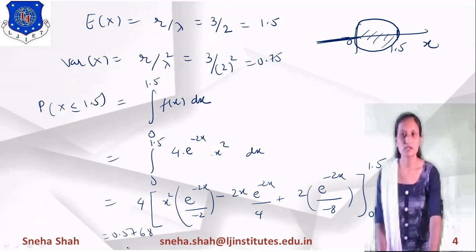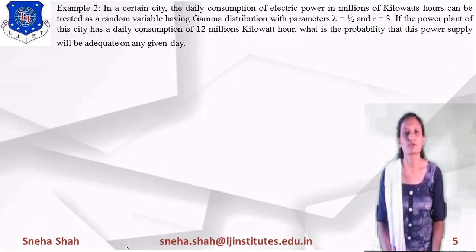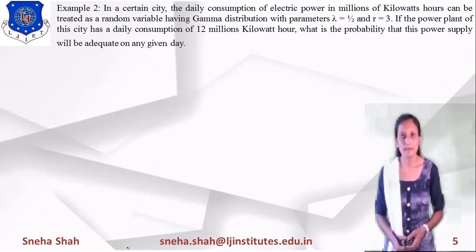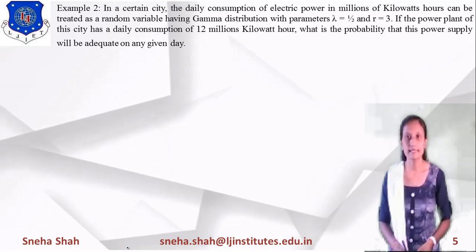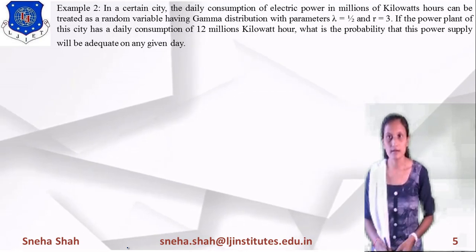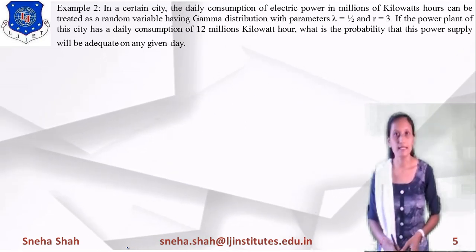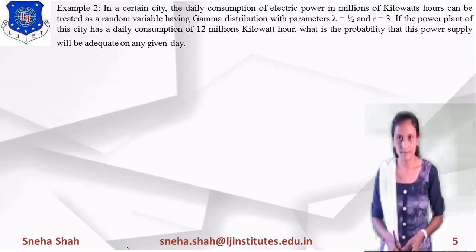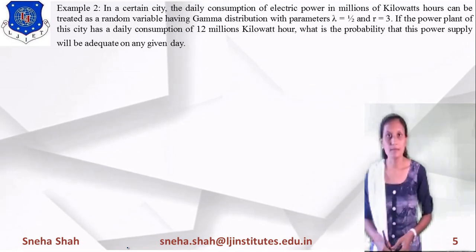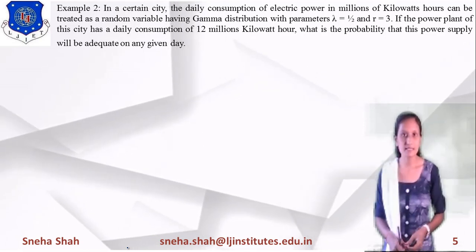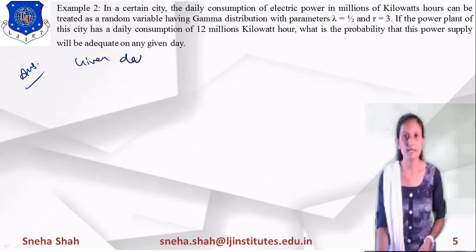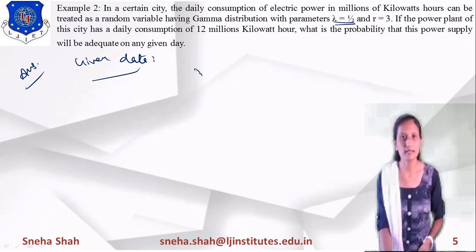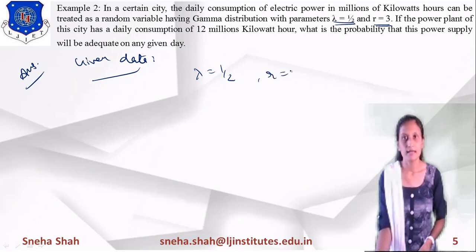This way we can solve any probability using the gamma function. The next example: in a certain city, the daily consumption of electrical power in millions of kilowatt-hours can be treated as a random variable having gamma distribution with parameter λ = 1/2 and r = 3. If the power plant has a daily capacity of 12 million kilowatt-hours, what is the probability that the power supply will be adequate on any given day? Given: λ = 1/2 and r = 3.